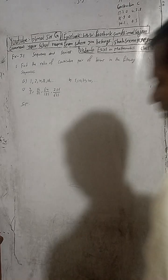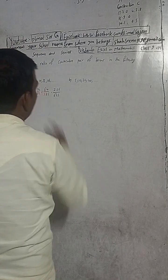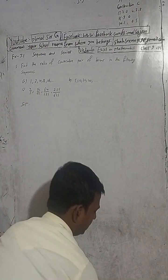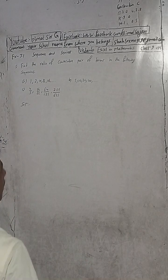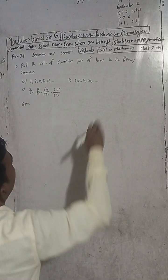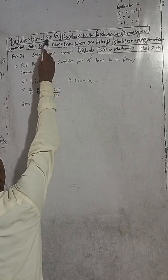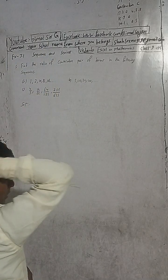Here, this is question number 5, Exercise 3.1, Sequence and Series. Vedant Excel in Optional Mathematics, Class 9. Turn forward to check the playlist — you will get a lot of solutions there.